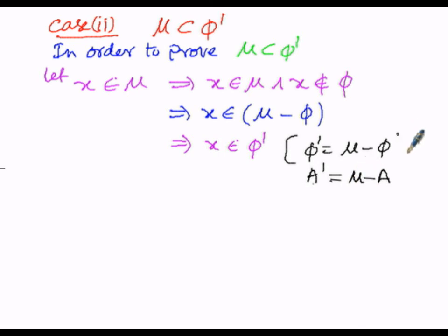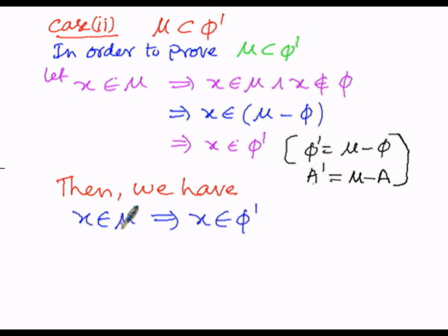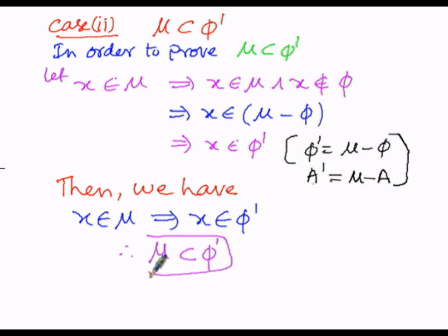Based upon this reason, x belongs to μ implies x belongs to φ dash. The element x belongs to the universal set μ and x is also belonging to φ dash. The elements present in the universal set LHS are also elements of φ dash, the complement of the empty set. Therefore the universal set must be the subset of φ dash. Hence μ is the subset of φ dash. In this manner we have proved Case 2. Let us consider this as Equation 2.